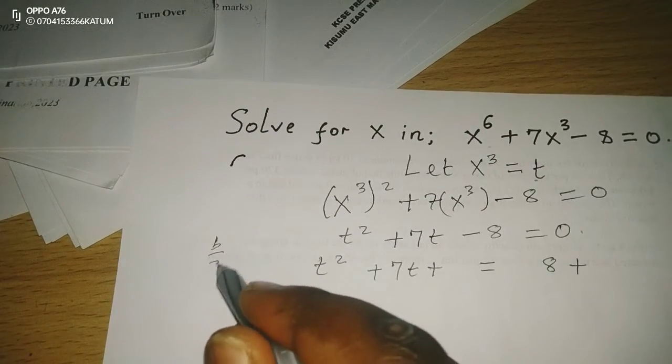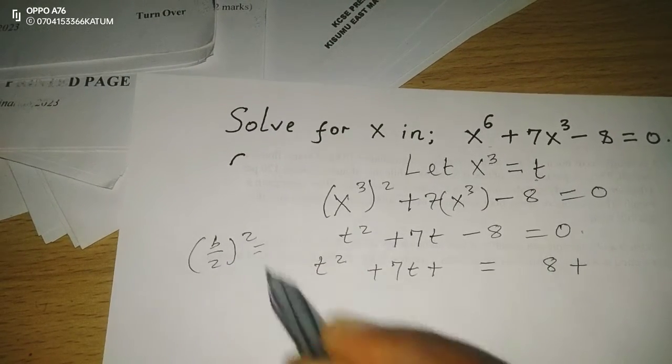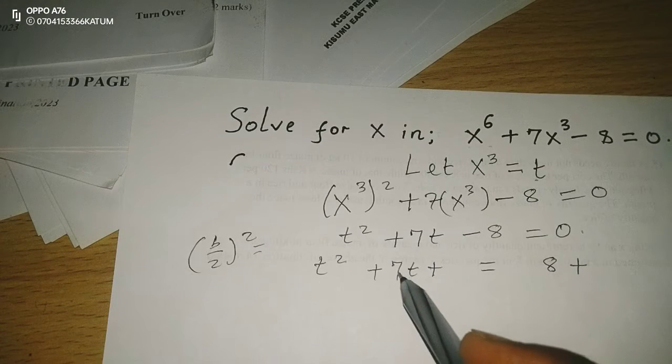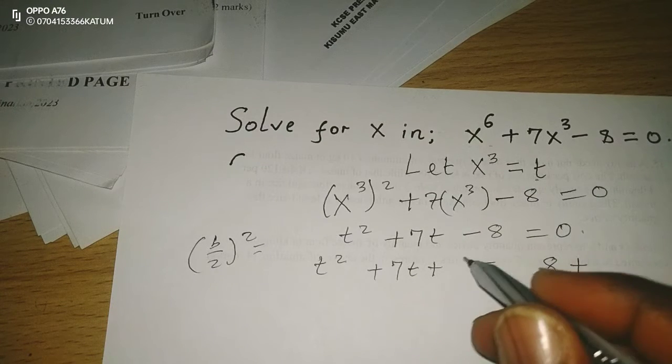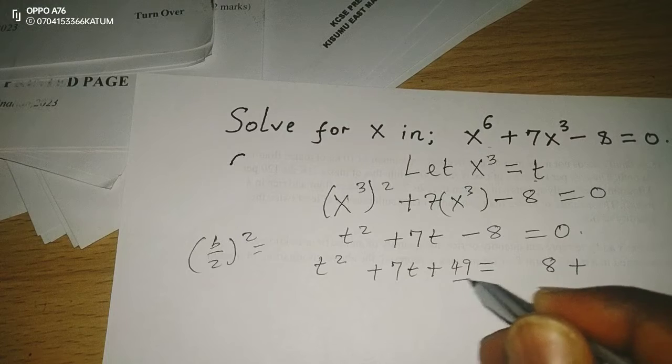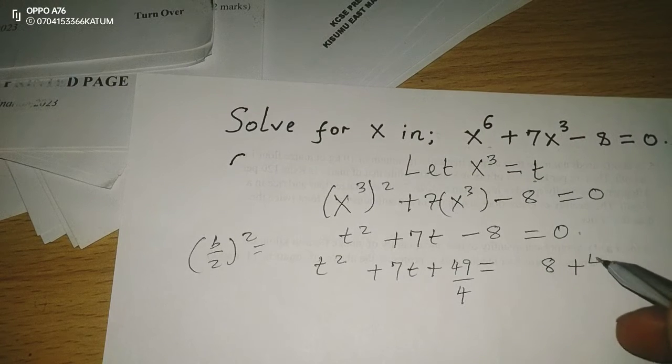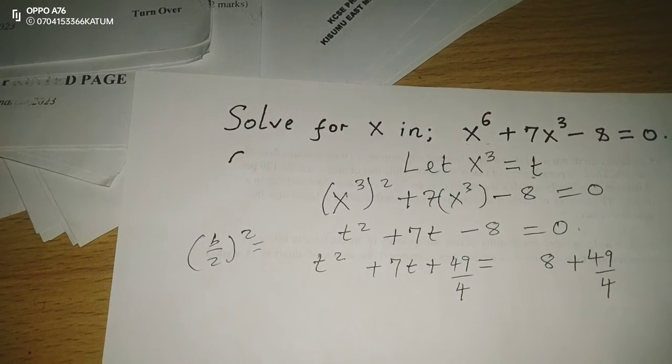a constant which is given by (b/2)^2, so that we may complete the square. So 7/2 squared will become 49/4, and also this side 49/4.